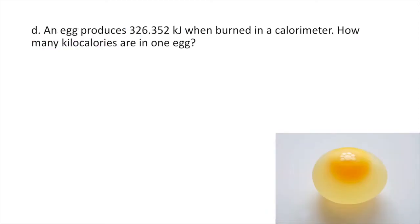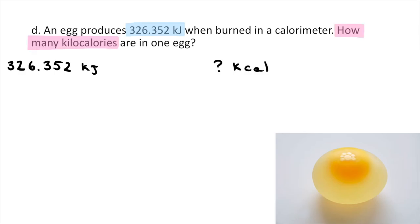An egg produces 326.352 kilojoules when burned in a calorimeter. How many kilocalories are in one egg? They're giving you 326.352 kilojoules. They're asking for kilocalories — pay special attention to the units. The first thing needed is a conversion factor relating kilojoules and kilocalories: there are 4.184 kilojoules in one kilocalorie.